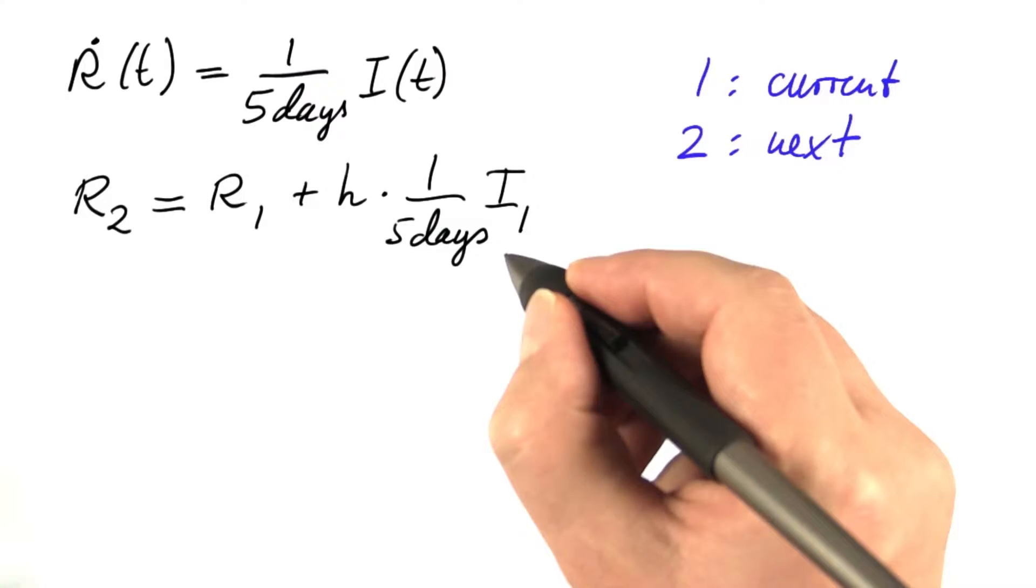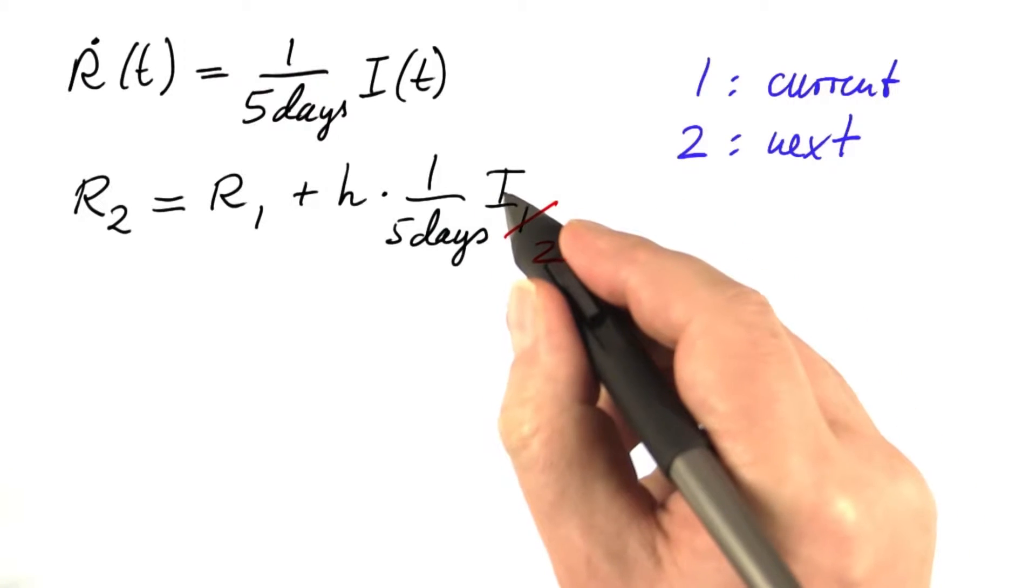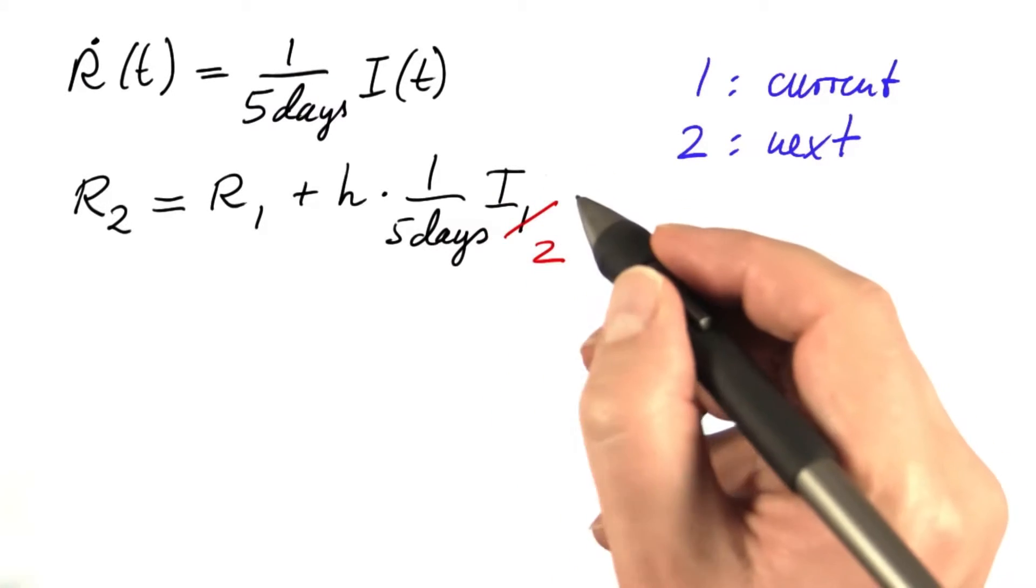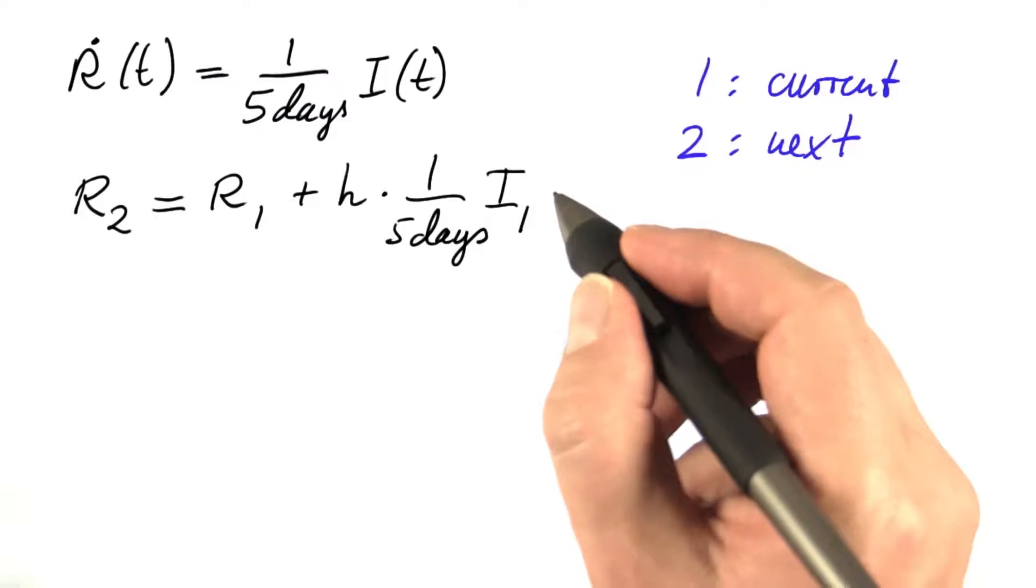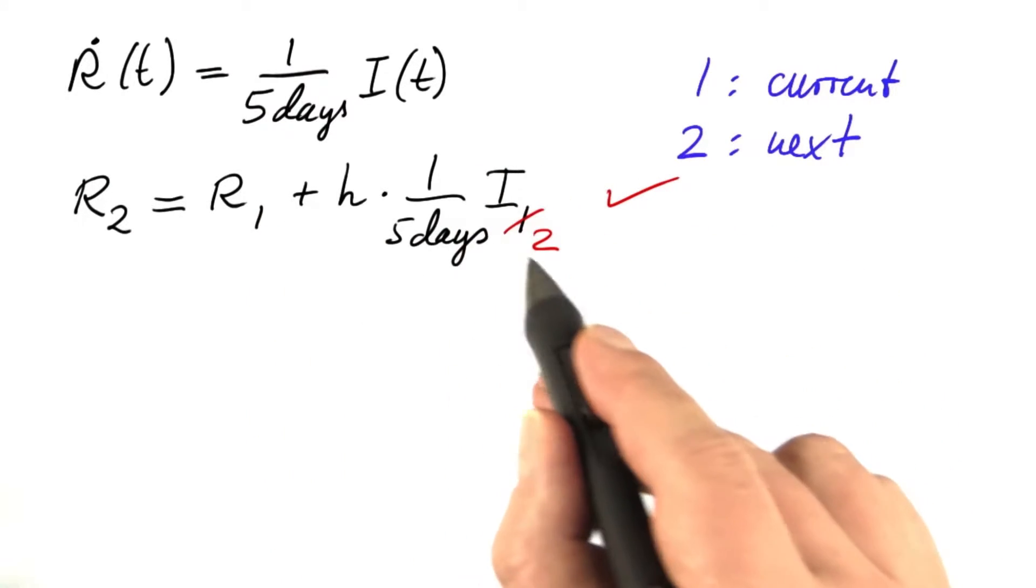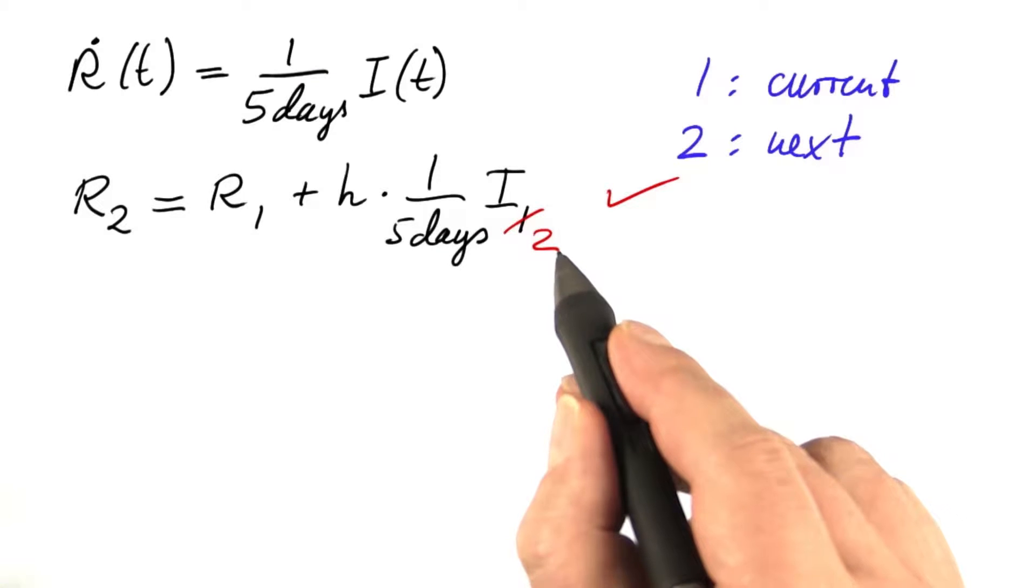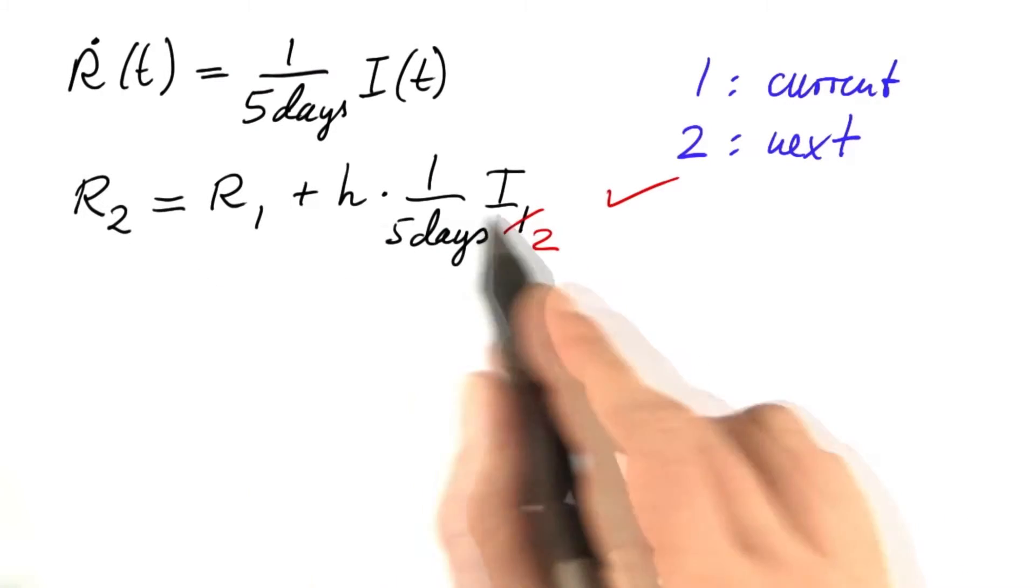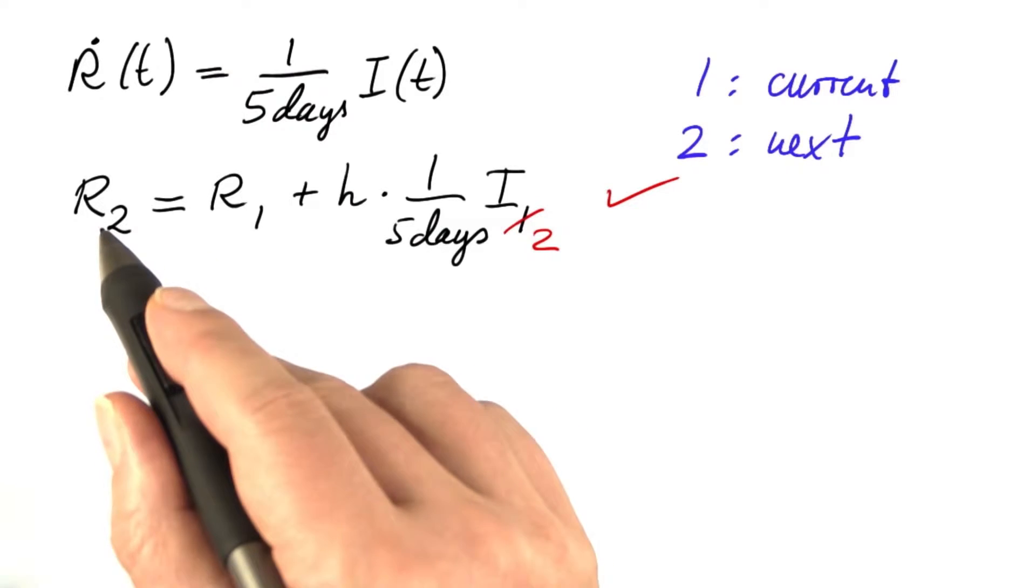But now we're concerned with the backward Euler method, which means that we have to use the rate at the end of that step, meaning i2 has to go in here. And now we're done. We know the current value of r. We have computed the next value of i in the lines before. And that's all we need to compute the next value of r.